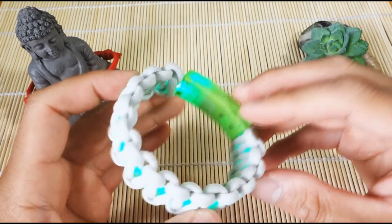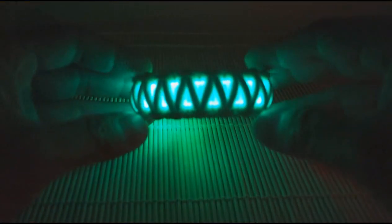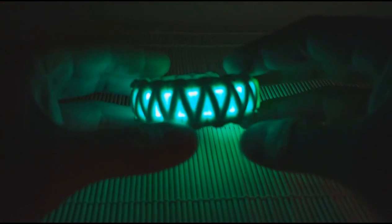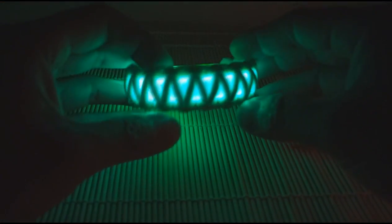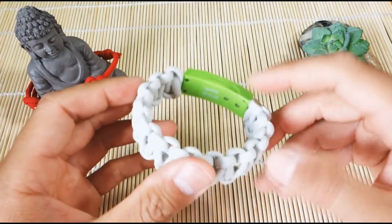So as you can tell, this is the Cobra Stitch, so if you know how to do the Cobra Stitch, it's pretty much a no-brainer on how to do this one. The only special thing you'll need is this light-up bracelet, which I'll tell you about in a second.